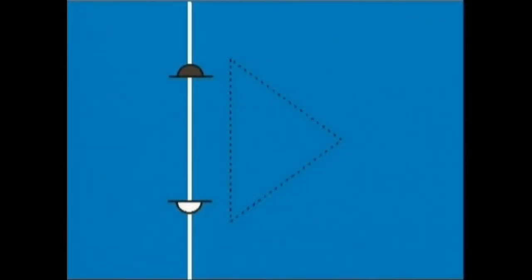Triangeluaren oinarrian, badira beste bi kokagune aktoreen aurrealde banatan. Eta barrualdeko angelu kontrajarriak deitzen direnak. Kamera kokagune horietan kokatuz gero, aktore bakoitzak bere aldetik har dezakegu.